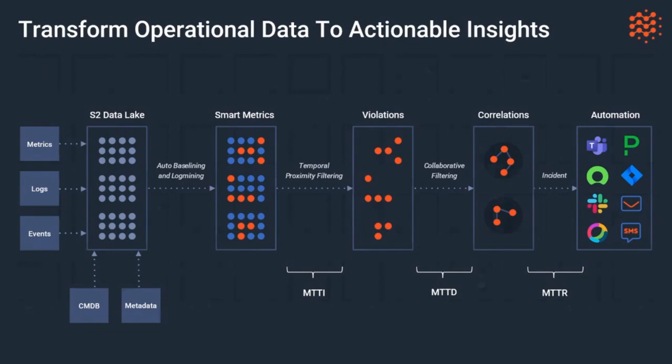Once we collect that data — metrics, logs, events, CMDB data, and metadata — we warehouse it within our own data lake. Once we have that telemetry, we apply machine learning based baselining to it. We understand what normal is for each time series, and when the current time series deviates away from that baseline, we capture that as an event and put it in an event ledger. We're not just going to send out an alert — we're going to use that data for correlations later.